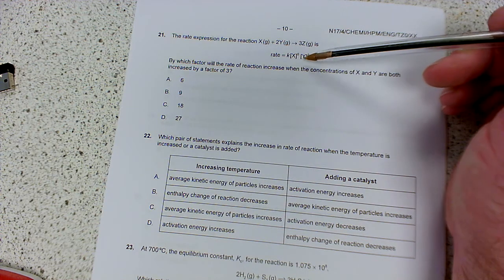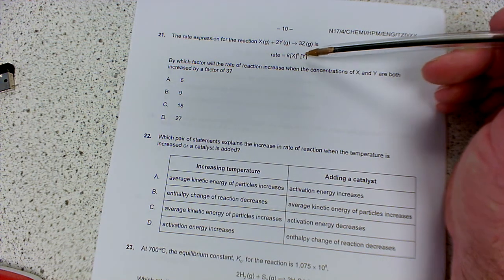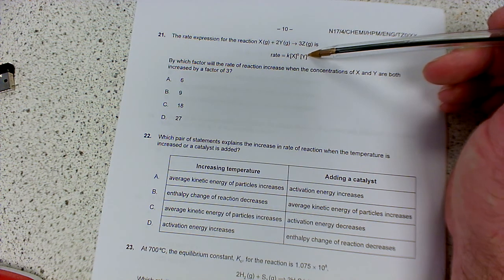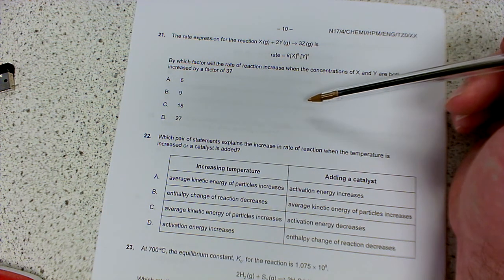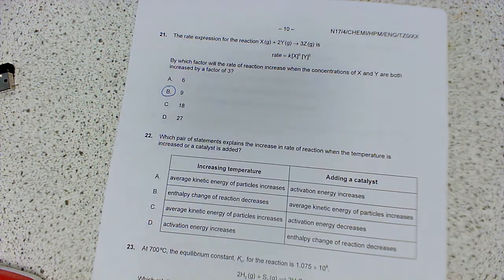Whereas Y is second order, so if the concentration increases by a factor of 3, that would be 3 squared, so it would become 9 times faster. Okay, so 3 squared would be 9 times faster. So it's going to be this one.